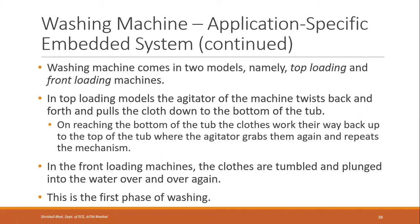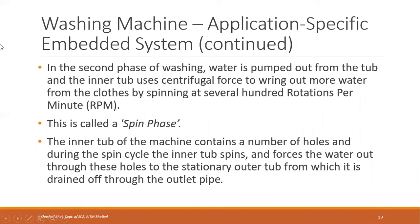After washing, the clothes need to be rinsed because soap remains in them. The water has to be drained out, fresh water brought in, and the rinsing process repeated. In the second phase — the spin phase — water is pumped out and the tub uses centrifugal force, spinning at several hundred rotations per minute to wring out water from the clothes.